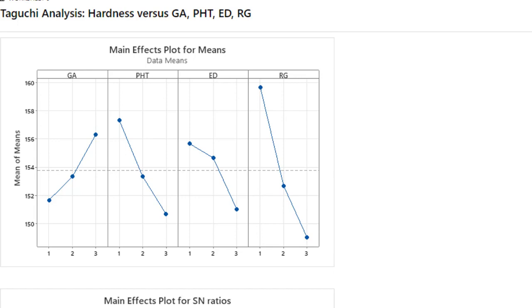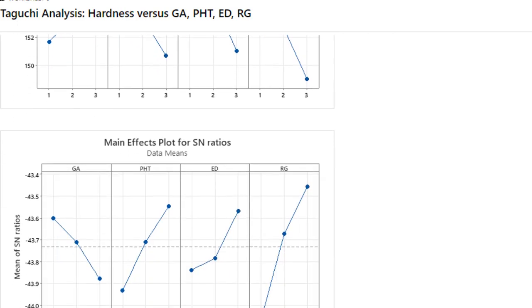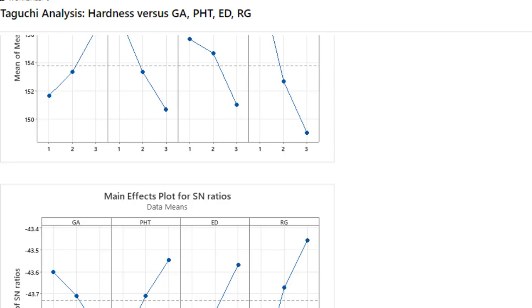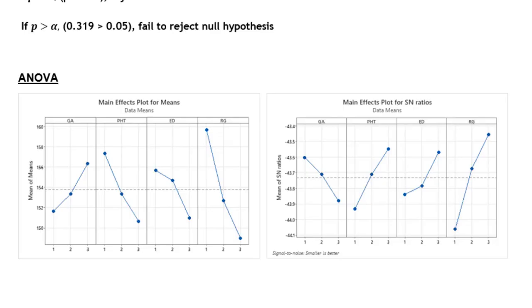Now we will go to the signal to noise ratio plot. Here is an interesting thing: at the point where we got the least value of the response, we get the highest signal. Level 1 of GA is giving us the highest signal. Likewise, PHT level 3 is giving us the maximum or highest value of the signal to noise ratio.